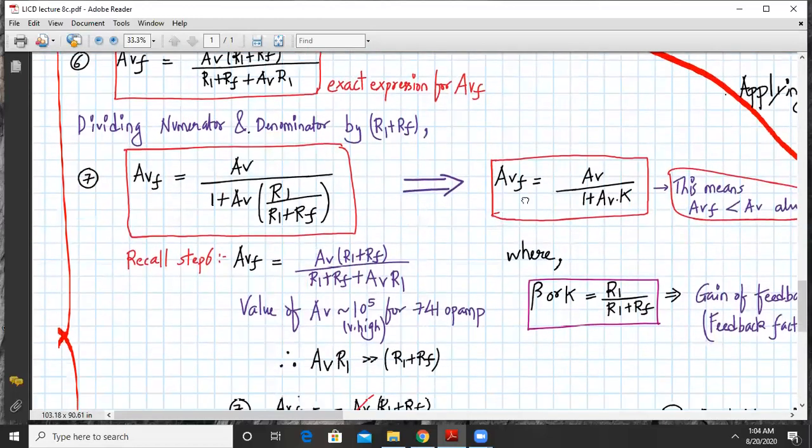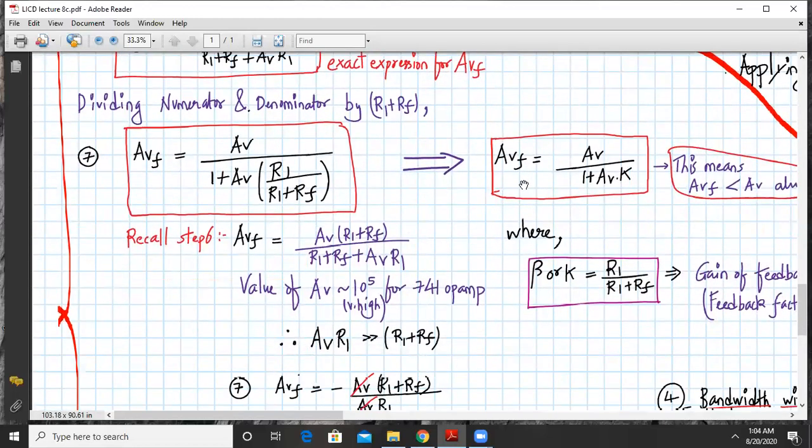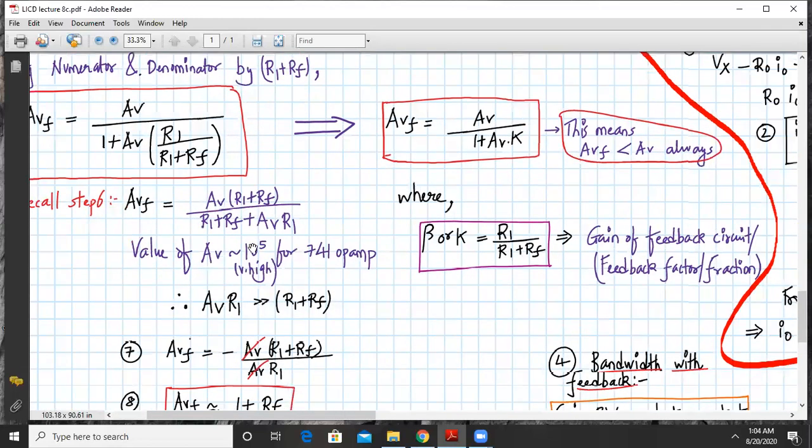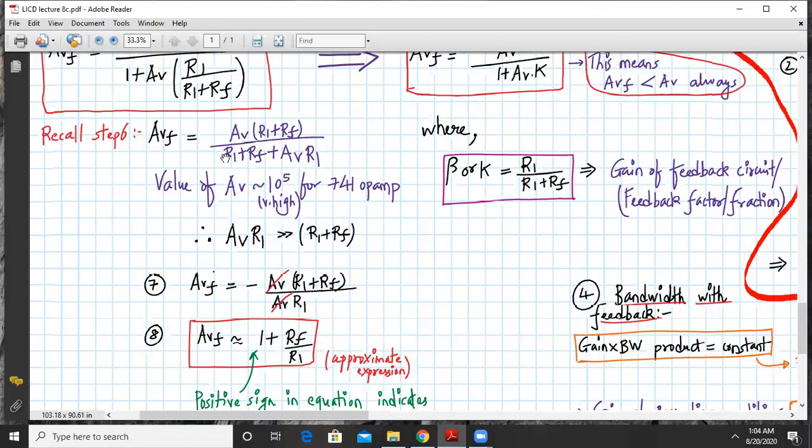Now let us recall this exact expression of AVF. In this expression if you look carefully, the value of AV is extremely large, around 10 raised to 5, 4, 7, or 4, 1 for an op-amp. It is very large. So in the denominator, this term AV into R1 is very much greater than R1 plus RF. So we can ignore the value of R1 plus RF in the denominator.